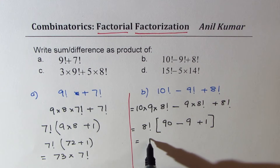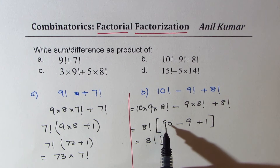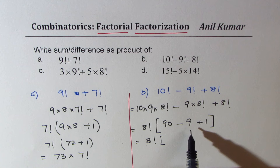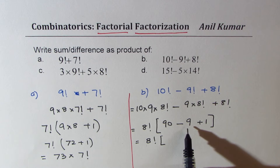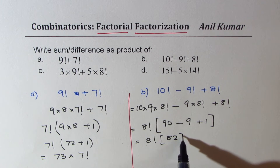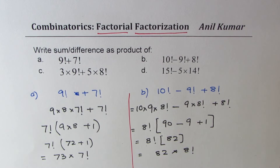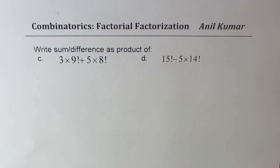So that gives us 8 factorial times 90 minus 9 plus 1. That is 81 plus 1, which is 82. So we get 82 times 8 factorial as the result. I hope the steps are clear to you. Now take part C and D as your test questions — pause the video, answer these, and then look into my suggestions.